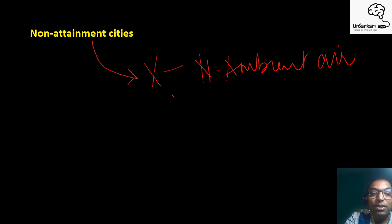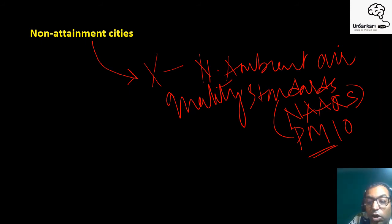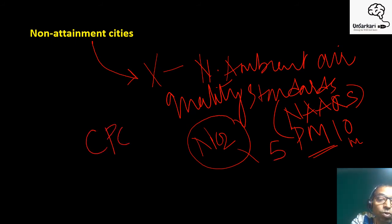Non-attainment cities are those cities which have failed to meet national ambient air quality standards or NAAQS for PM10, that is particulate matter 10 microns, or nitrogen dioxide over 5 years. These were identified by Central Pollution Control Board on the basis of ambient air quality data available since 2014.